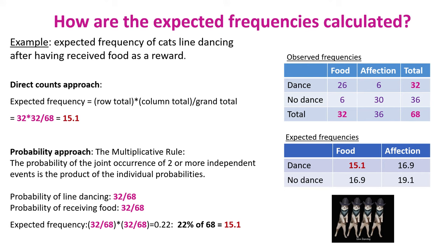If that doesn't make sense, let's try the probability approach, which relies on the multiplicative rule: the probability of the joint occurrence of two or more independent events is the product of the individual probabilities. In this experiment, regardless of the reward, the probability of a cat line dancing is 32 out of 68. Similarly, regardless of the outcome, the probability of a cat receiving food as a reward is also 32 out of 68. So the probability of these two independent events occurring at the same time is simply their multiplication, giving us 0.22, and 22% of 68 is 15.1. Voilà — and of course, this is done for all four groups.